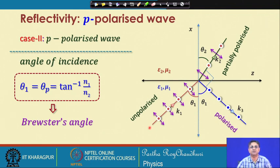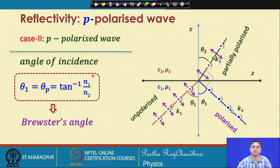The incident wave has both polarizations — s-polarized and p-polarized — but at Brewster's angle the reflected wave contains only the perpendicular component (u_i direction) of the electric field, making the reflected light purely polarized. The transmitted wave is only partially polarized. This specific angle of incidence for which the reflected wave is purely polarized is called Brewster's angle.